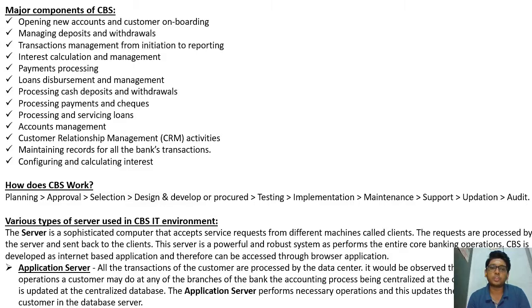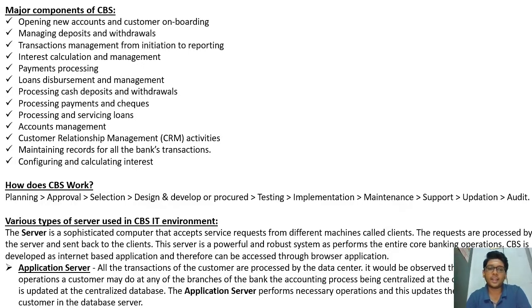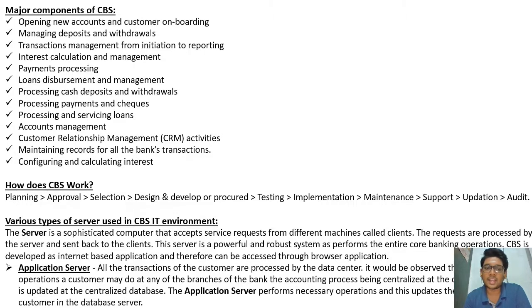A server is a sophisticated computer that accepts service requests from different machines called clients, processes those requests, and sends results back to the client. CBS is developed as an internet-based application accessible through a browser. The application server processes all customer transactions at a data center — whatever operation a customer performs at any branch, the accounting process is centralized and updated in the centralized database.